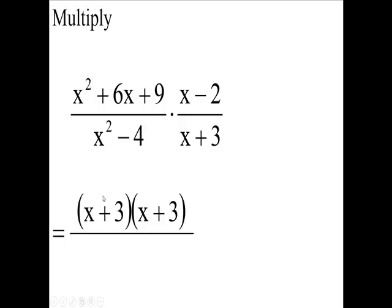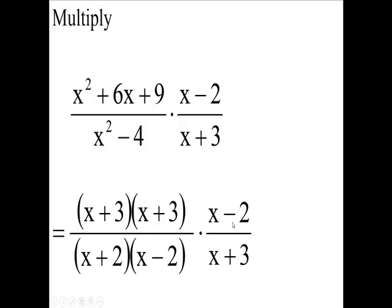So we're going to have (x + 2) and (x - 2), and then we copy our other fraction down. Now notice you have (x - 2) and (x - 2). You could divide those and cancel them.